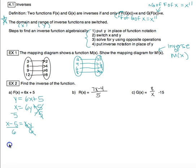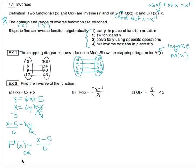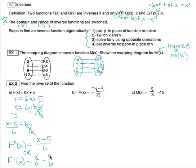Step four: put inverse notation in place of y. Since the original is capital F of x, this becomes capital F prime of x equals x minus five over six. Also be aware that sometimes the answer might be written differently — they might separate the pieces and write x over six minus five over six, which is equivalent. Make sure you don't panic if your answer isn't listed exactly — look for an equivalent form.